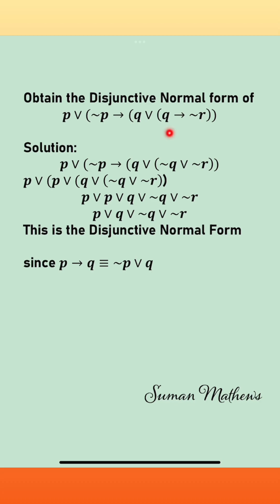So this innermost bracket I will write as negation q disjunction negation r, and everything else remains the same. Now applying the same implication rule to the outer implication, this becomes p disjunction p disjunction, and this inner part becomes q disjunction negation q disjunction negation r.